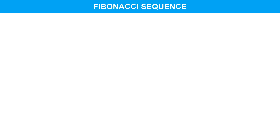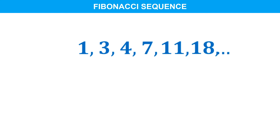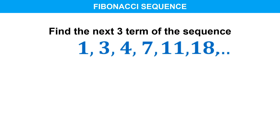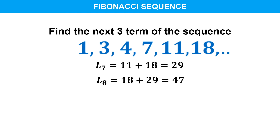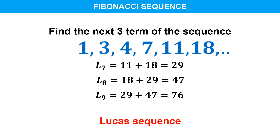There are other sequences that behave like the Fibonacci sequence. One example is the sequence 1, 3, 4, 7, 11, 18, etc. Note that except for the first and second terms, all other terms are determined by simply adding two successive terms. The seventh term is 11 plus 18, which is equal to 29. The eighth term is 18 plus 29, or 47. And the ninth term is 29 plus 47, equal to 76. This sequence is also known as the Lucas sequence — try to Google it.